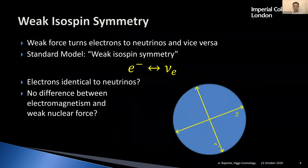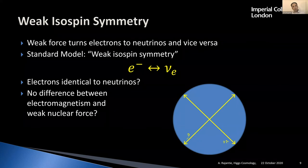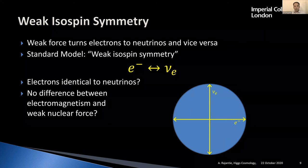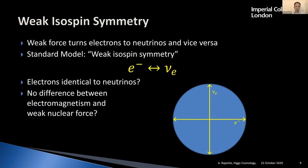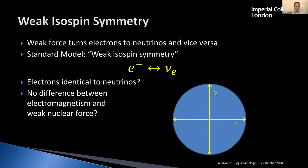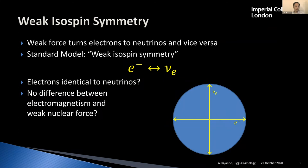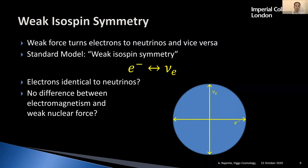In the standard model we have a number of symmetries, and the most important one for this story is called weak isospin. It's the symmetry responsible for the weak nuclear force, and to some extent also for electromagnetism. You can think of it as a symmetry that relates electrons and neutrinos — the theory actually has a symmetry between them. At the theoretical level, electrons and neutrinos are identical. Similarly, at the theoretical level, electromagnetism and the weak nuclear force appear in an identical way. That's what the symmetry is — a symmetry between them.